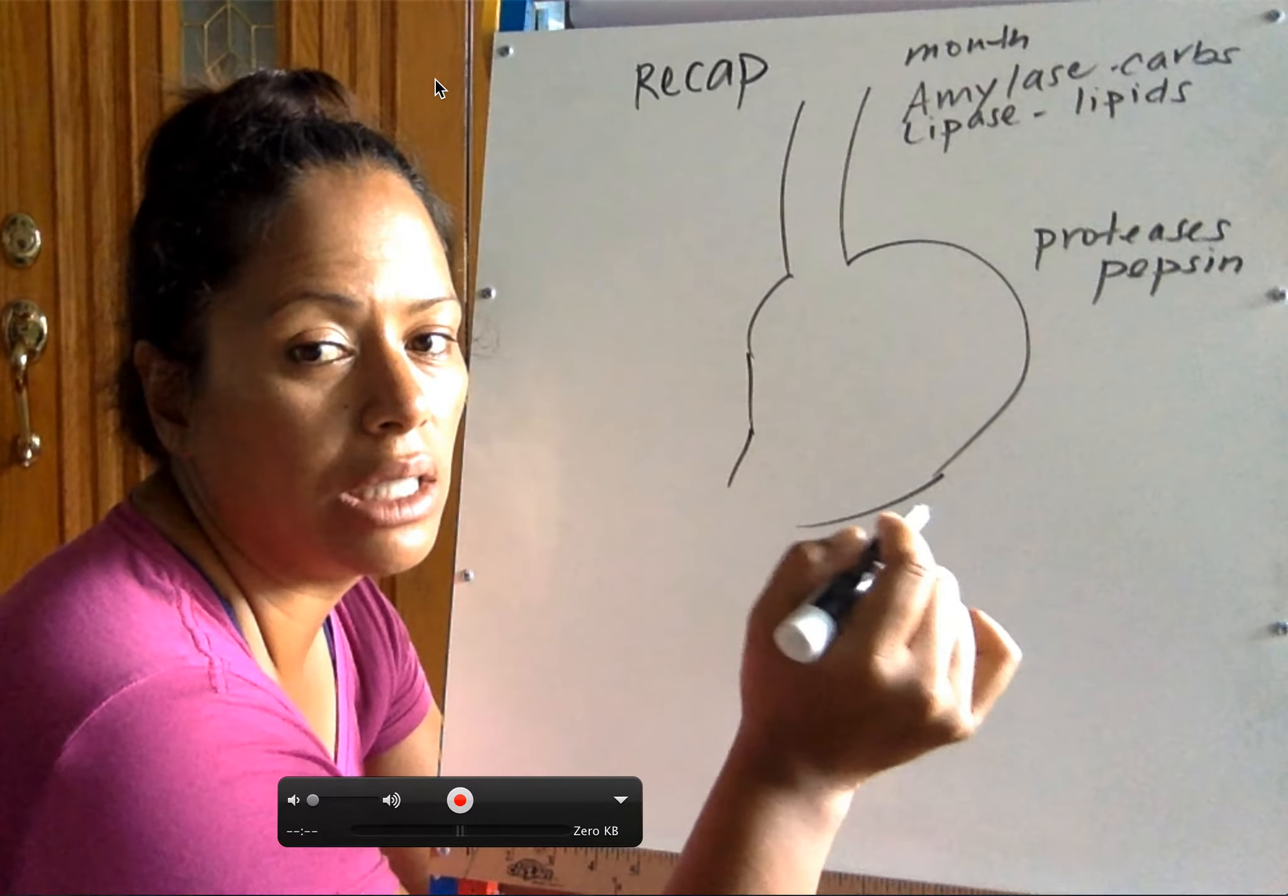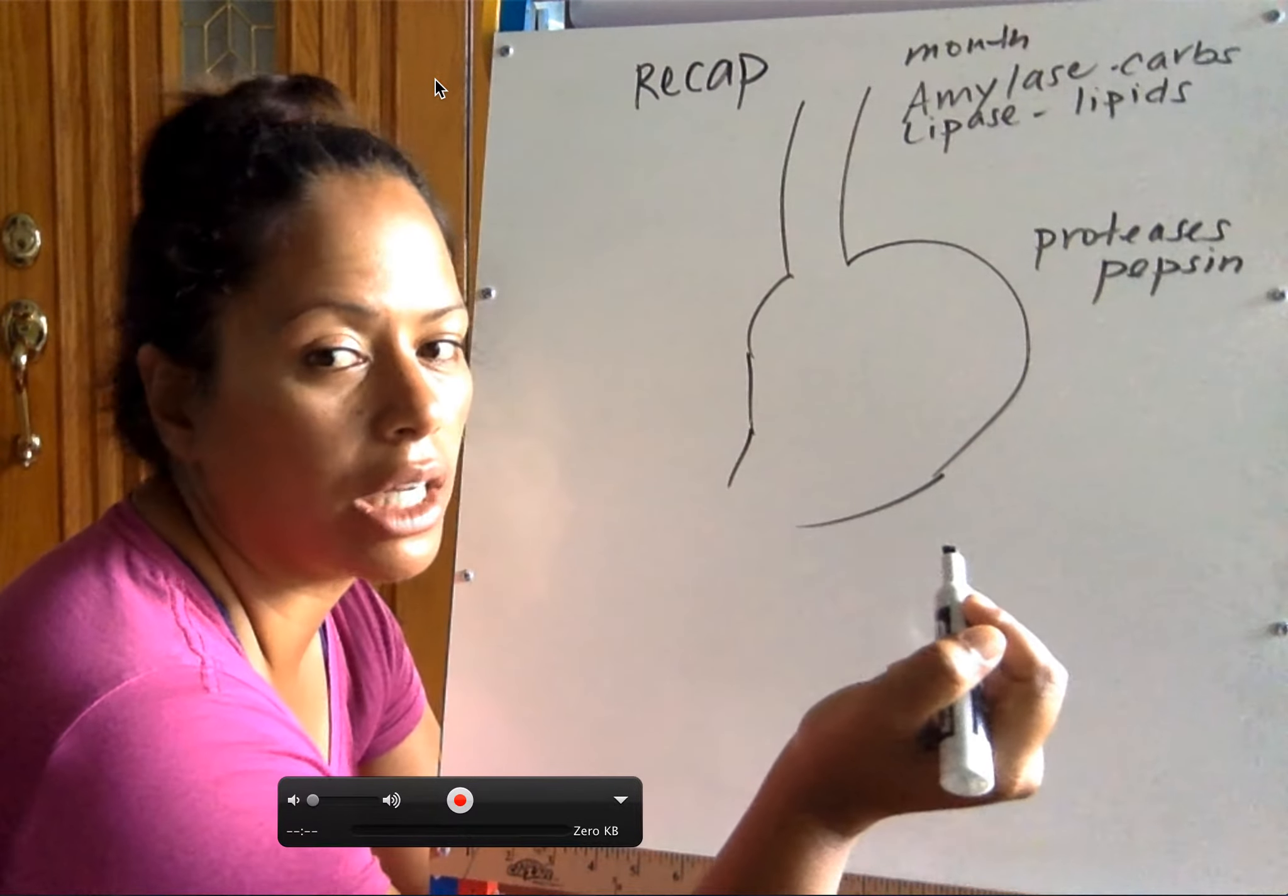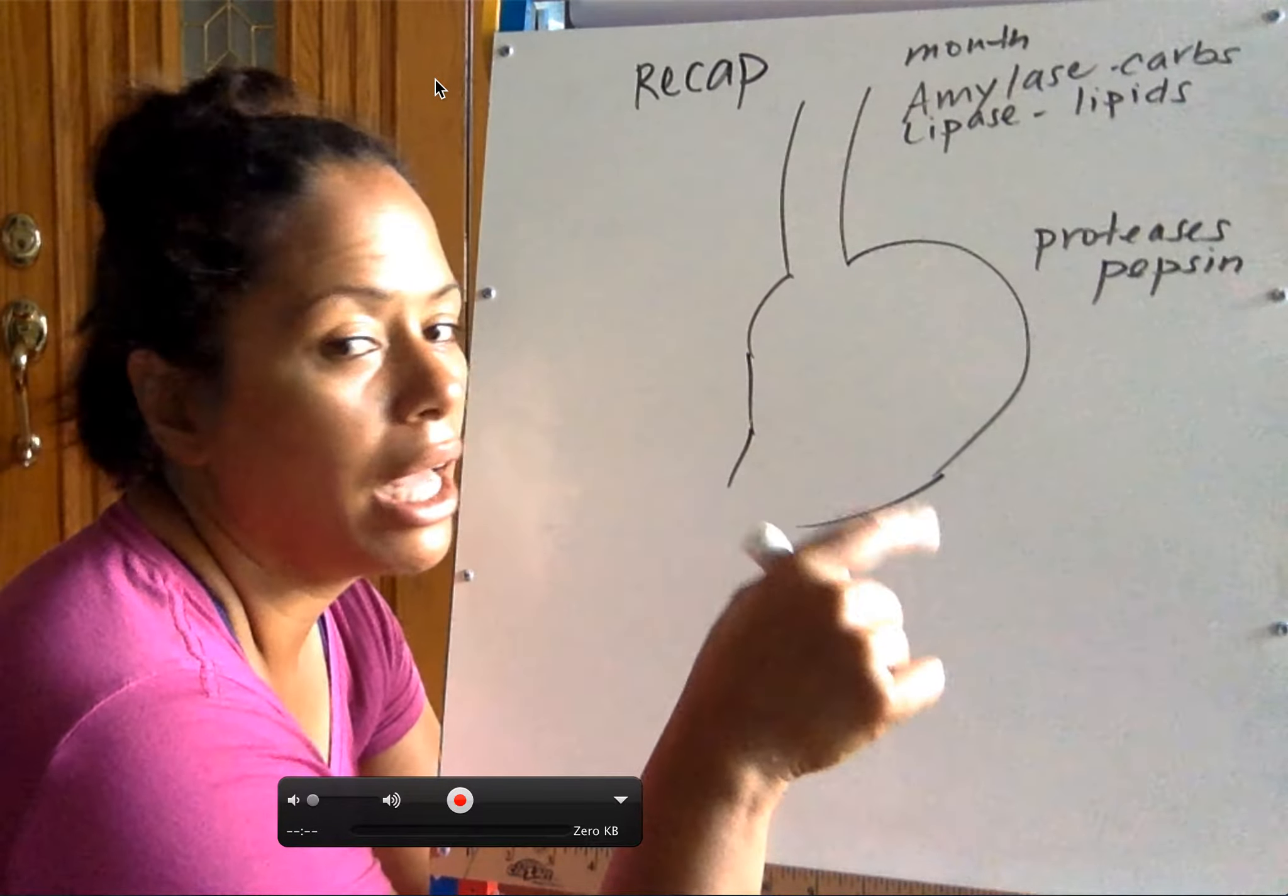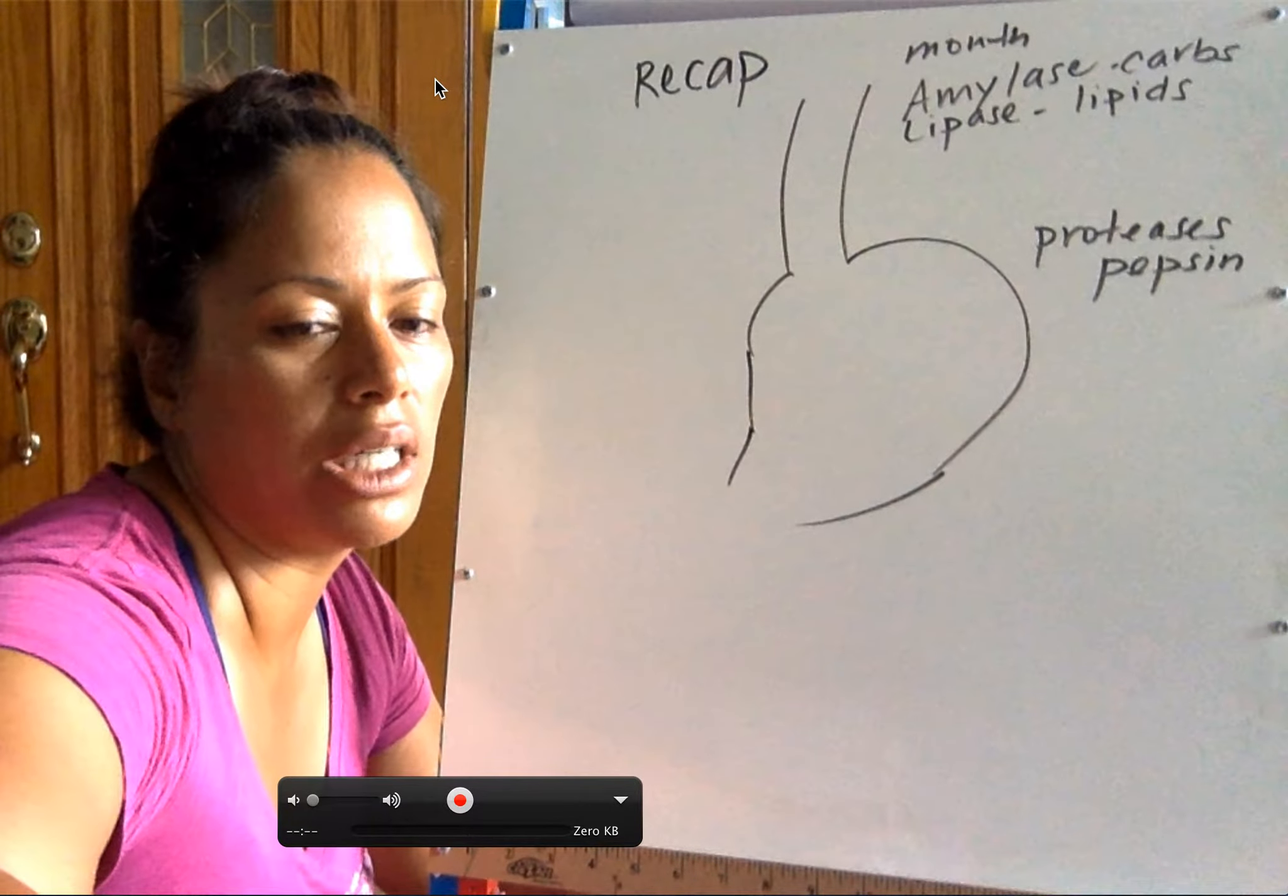Who releases it? Chiefs, chiefs are peppy. And who stimulates the conversion or activation of pepsinogen to pepsin? Acid. Who releases acid? We said it was the parietal cells.